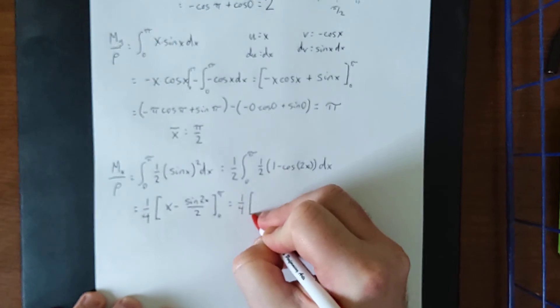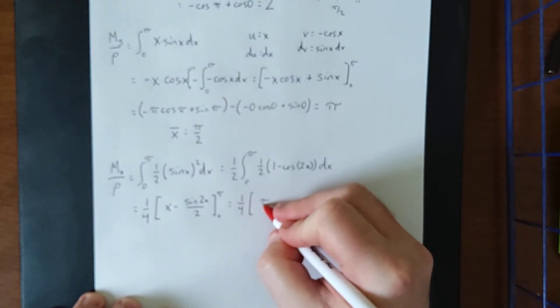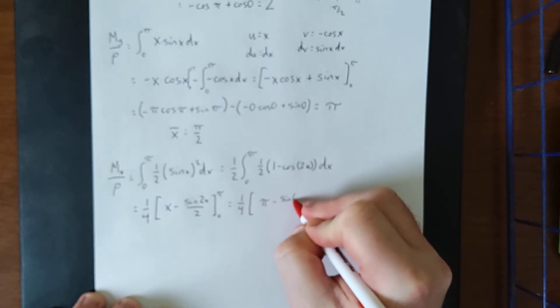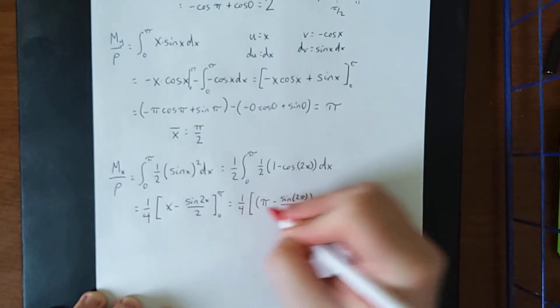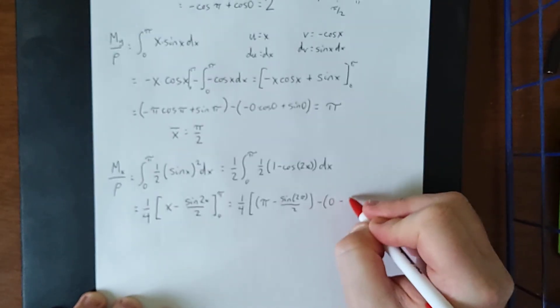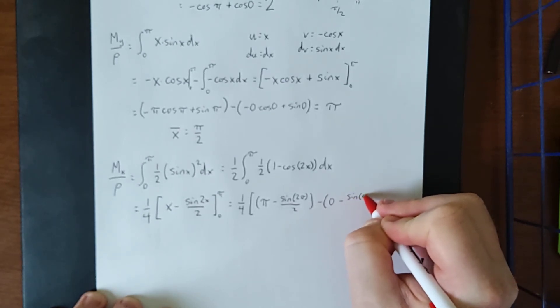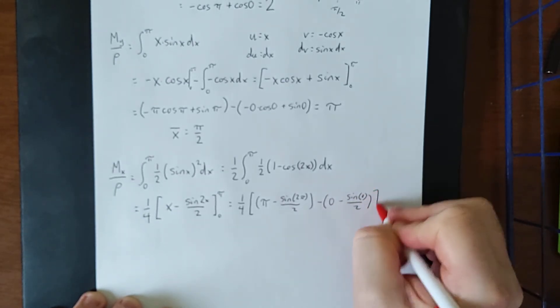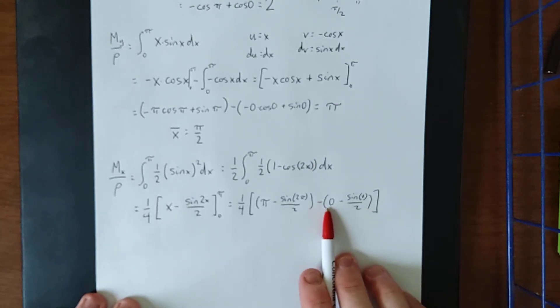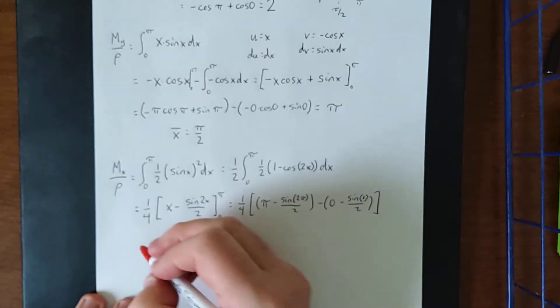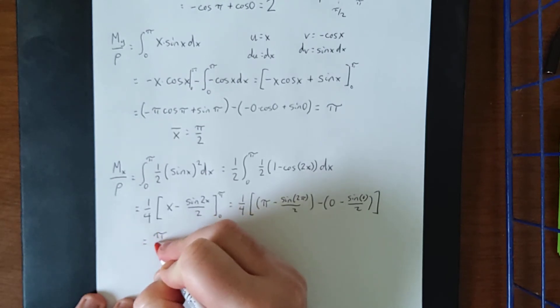minus zero minus the sine of zero over two. Good news is this term is zero, this term is zero, and this term is zero, leaving us with only pi over four.